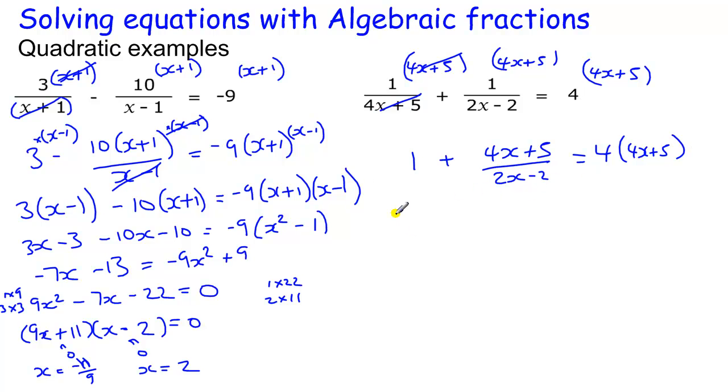Times the 2x minus 2. 2x minus 2 times that, 2x minus 2 times that, 2x minus 2 times that, so we've got one lot of that, which is 2x minus 2, plus I'll just put the bracket around there to keep it tidy, and this pair cancelled, so we're going to give me 4x plus 5, and then four lots of all this horrible thing, 2x minus 2.